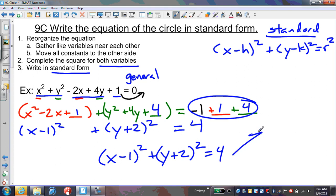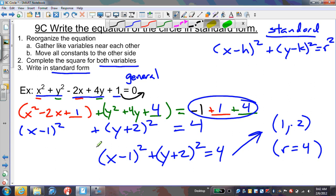From this, we can get a center of (1, -2) and a radius of 4. That's what we're pulling out from the standard form equation.